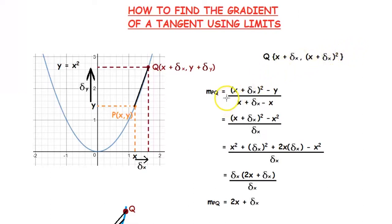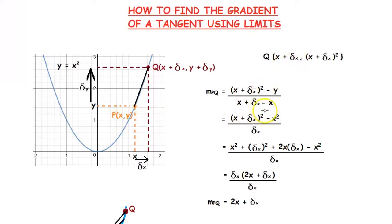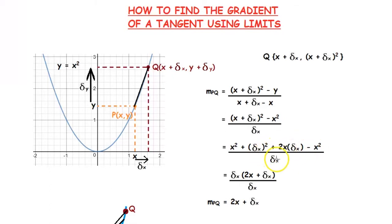We learnt how to find the gradient of a curve previously — you will find a link to this video in the description below. So, the gradient of PQ will be (x + delta x)² minus y, divided by (x + delta x) minus x. Instead of y we write x squared, and x cancels in the denominator, giving us ((x + delta x)² − x²) / delta x. Expanding the bracket gives x² + (delta x)² + 2x·delta x − x², divided by delta x.